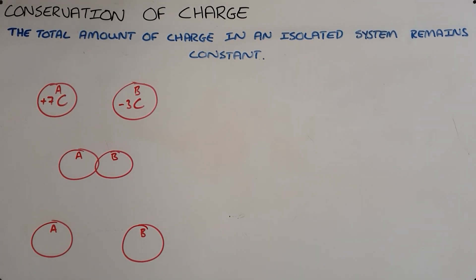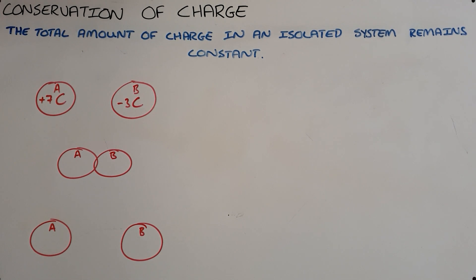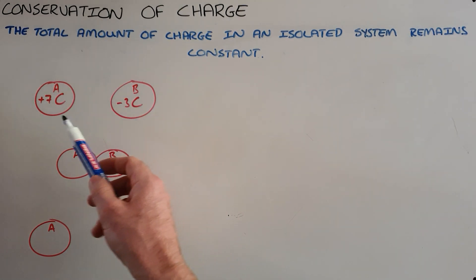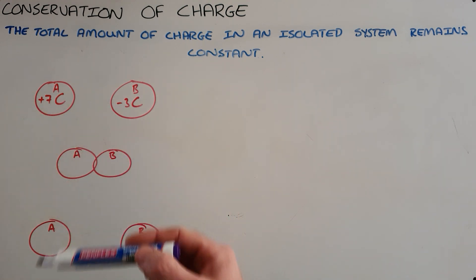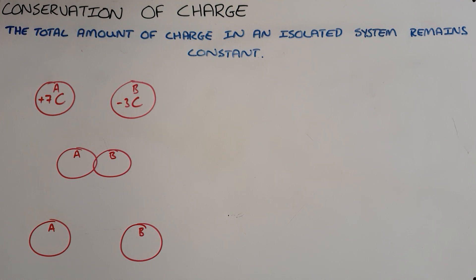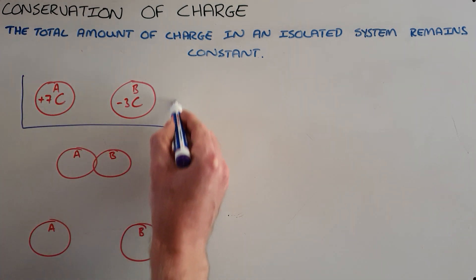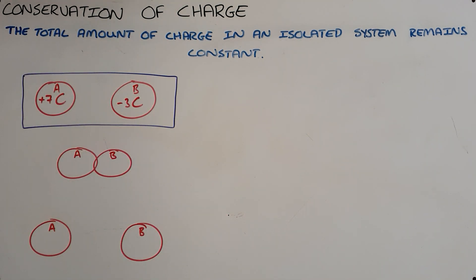The principle of conservation of charge states that the total amount of charge in an isolated system remains constant. One way that we show that is with something called charge sharing, where we have two charged objects that are initially separate from each other. Here we have object A with a charge of 7 coulombs and object B with a charge of negative 3 coulombs. The isolated system is the system that contains these two objects.